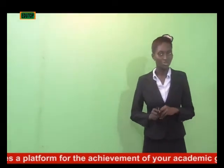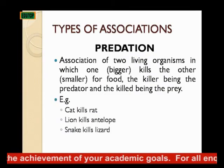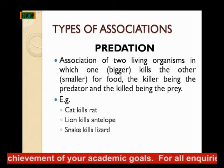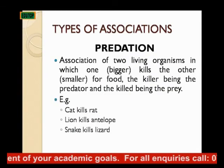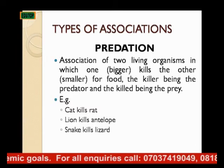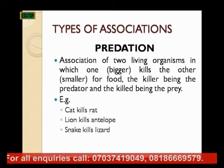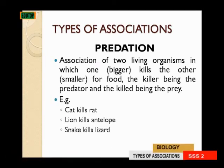The next one is predation. Predation is an association of two living organisms in which one — the bigger organism — kills the other, which is the smaller organism, for food. The killer organism, which is also the bigger organism, is called the predator, while the organism that is being killed, which is the smaller organism, is called the prey.